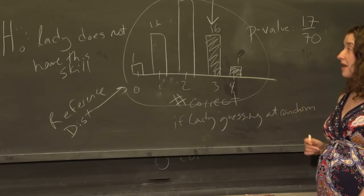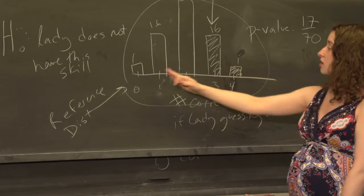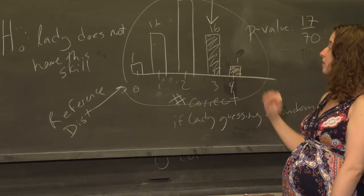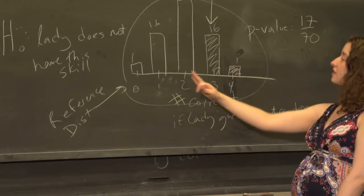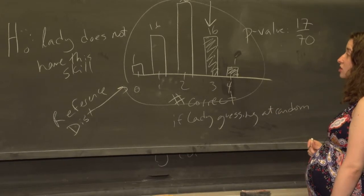To finish the hypothesis test, we look at what we actually saw. These are all the numbers of cups that she could have gotten right, but suppose she actually got three of them right. Then we say, looking at this histogram, looking at this distribution, how extreme is the value we actually saw?